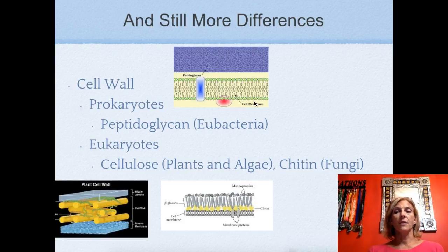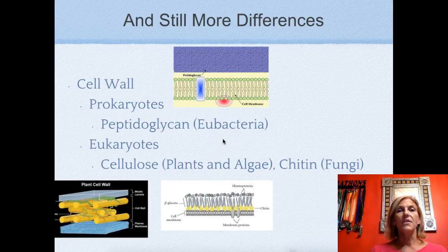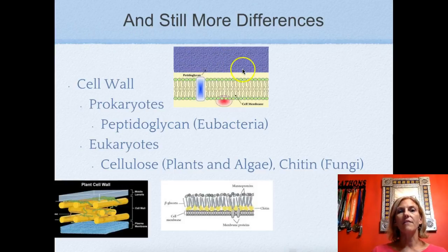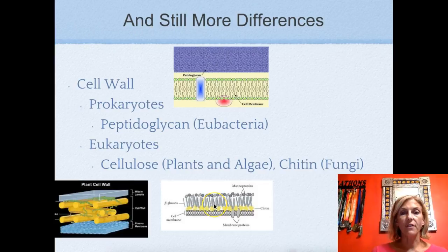Here's another difference: cell walls. Some eukaryotic cells have cell walls, like plants and fungi. The eubacteria have a substance called peptidoglycan — you can see 'peptide' and 'glucose' in there — which is a protein bound to a carbohydrate making up their cell wall. Bacteria even have a capsule outside of that. Plants use cellulose in their cell walls, and the yellow portion here is the chitin found in fungi.